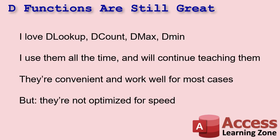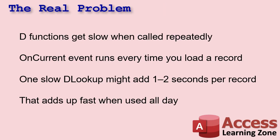If you've been watching my videos for any length of time, you know I love DLOOKUP. I use it everywhere along with DCOUNT, DMAX, DMIN, DSUM — all the D functions. There's nothing wrong with them. They're great tools and I will continue to use and teach them. But like any tool, they have their place. The problem is they're not optimized for speed. The D functions are convenient, easy to use, and they work fine in most situations, but they're not exactly fast, especially when you call them over and over again in something like an OnCurrent event, which runs every time a record loads.